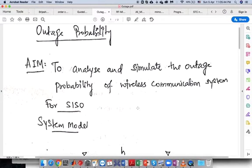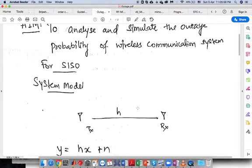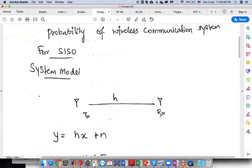So our aim is to analyze and simulate the outage probability of a wireless communication system. Our desired system is a 2x1 MISO system. However, we will start with a SISO system having a single transmitter and a single receiver.